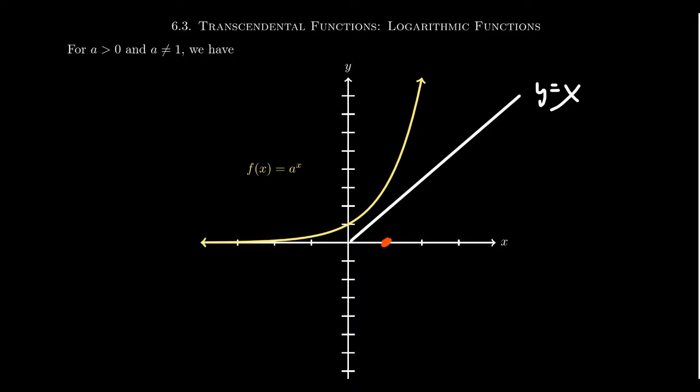This tells us that its inverse, the logarithm, will go to the point 1, 0. The exponential function also goes to the point 1, a. This tells us that our function, the logarithm, will go through the point a, 1. Trying to connect these dots together, we get something that looks like the following.